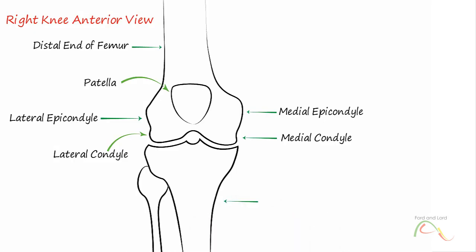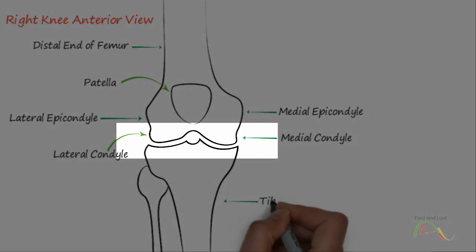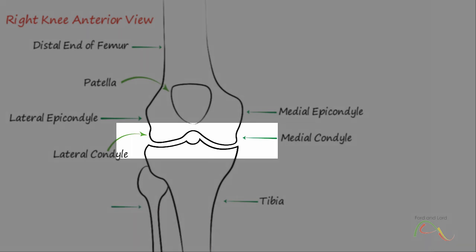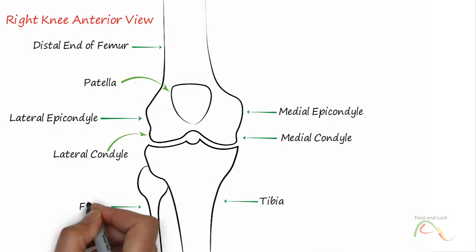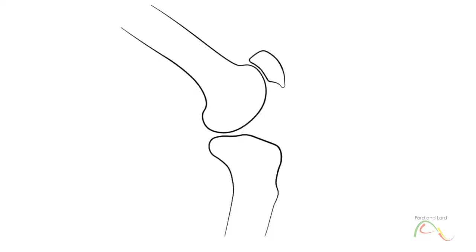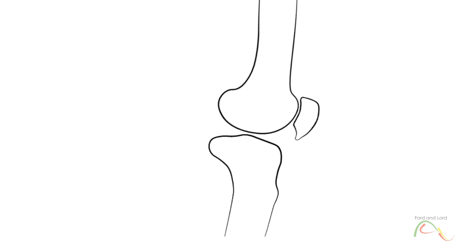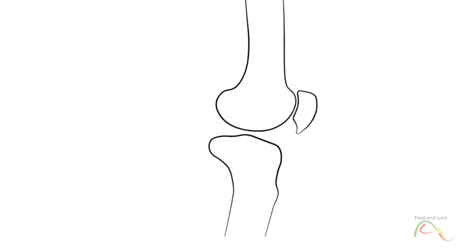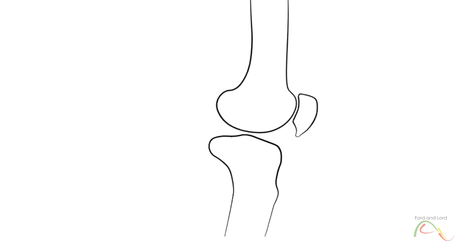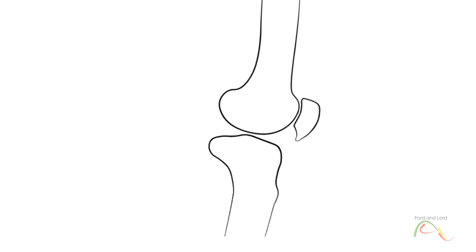The medial and lateral tibiofemoral joints are the articulations between the rounded condyles of the femur and the grooved condyles of the tibia. The knee is brilliantly designed by nature to carry out its functions. During flexion and extension, the condyles of the femur both roll and glide over the surfaces of the tibia. The rolling action produces flexion or extension, while the gliding action keeps the femoral condyles centered over the tibial condyles, ensuring maximal bony weight-bearing support for the femur in all knee positions.